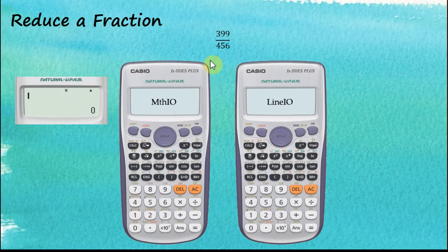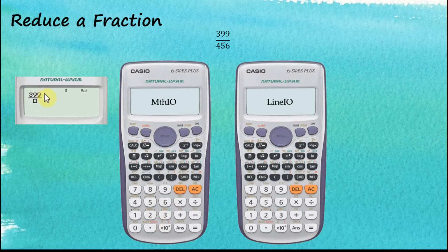Let's say we would like to reduce a fraction to a simpler form. For Math input, we start with the fraction containers. The numerator is 399, so we enter 399, then navigate to the denominator and enter 456.